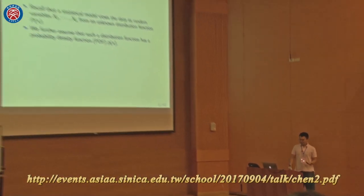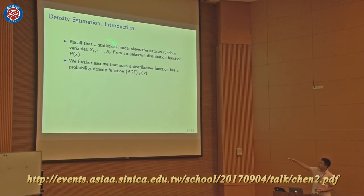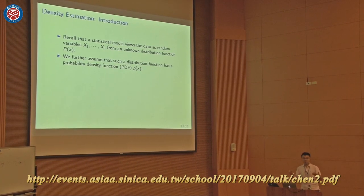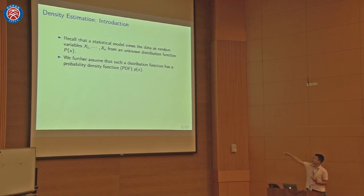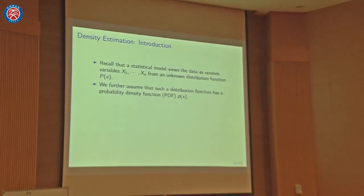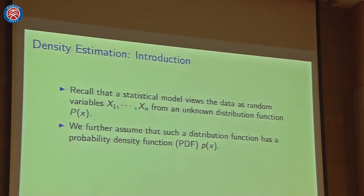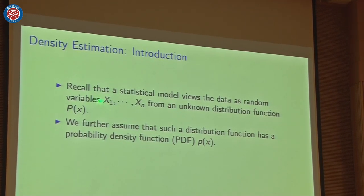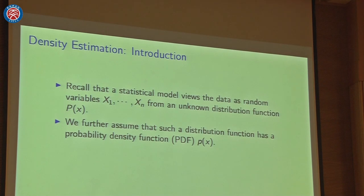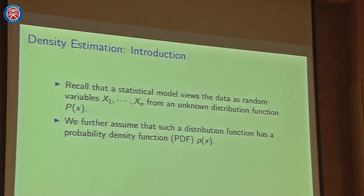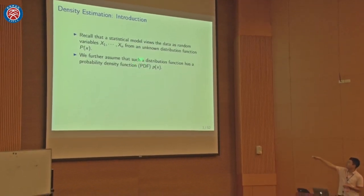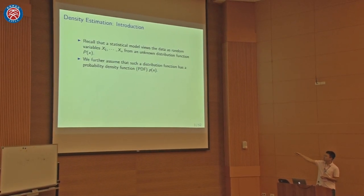The idea of density estimation is that we have observed our data — here just one-dimensional, a univariate problem, but it can be a multivariate case. We observe data x1 to xn, and in a statistical model we model them as random variables from some unknown distribution function F(x), which has a probability density function, abbreviated PDF, p(x).